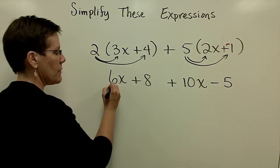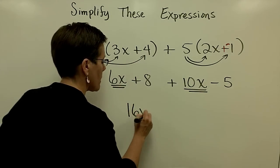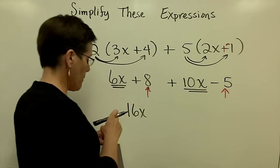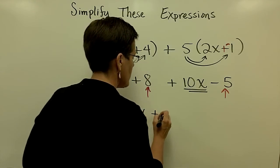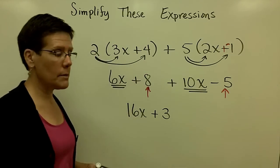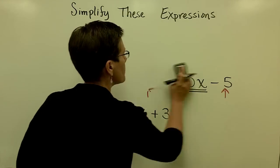And if I have some like terms, I should combine them. So 6x and 10x is 16x. And 8 and a minus 5 is a positive 3. A positive 8 minus 5 is a positive 3. All done. Can't combine those like terms. Let's look at something with some grouping symbols. It's got some parentheses.